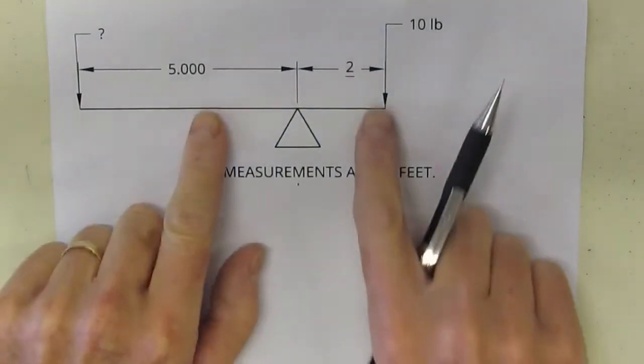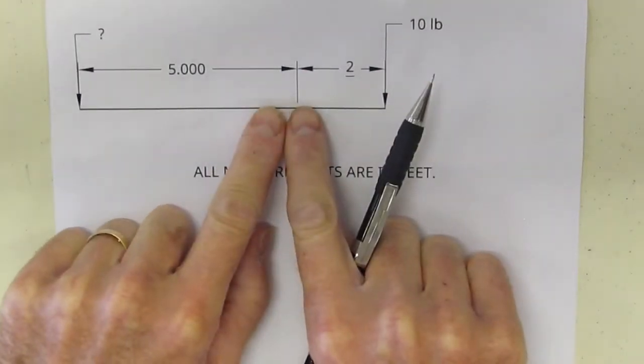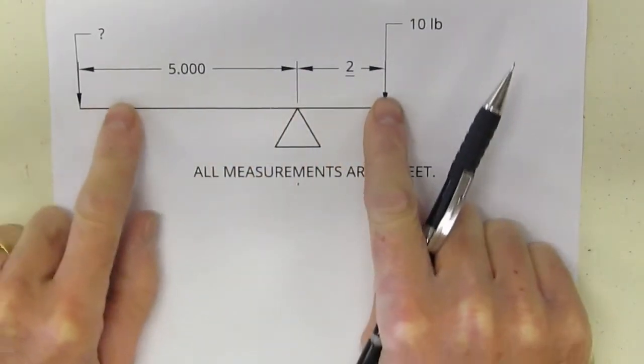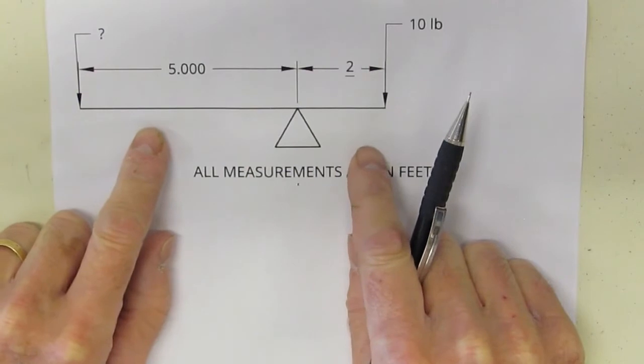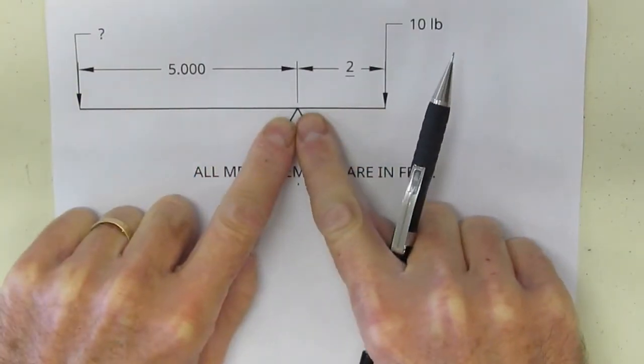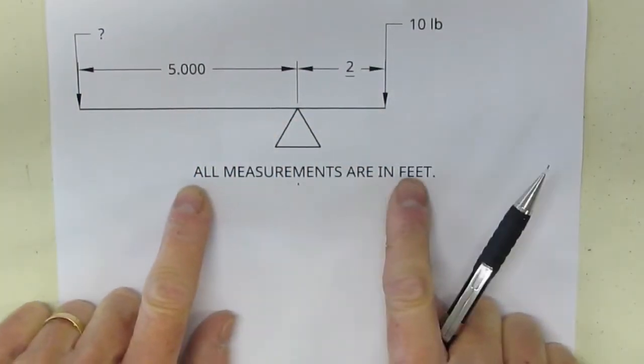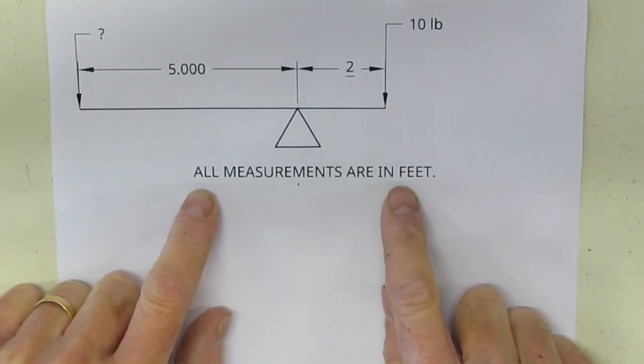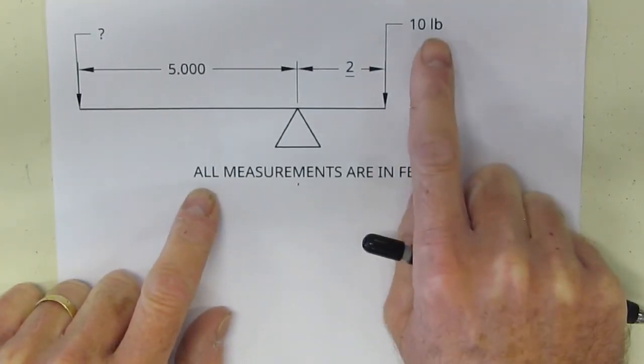Hello, in this video we're going to take a look at our teeter-totter. So we have a straight arm that's got to remain horizontal—that's our goal—and it's pivoting on this point. Notice that all our measurements are in feet. This will be consistent for all of our questions in this particular assignment.